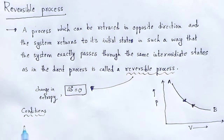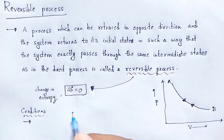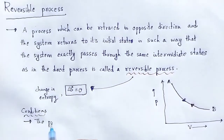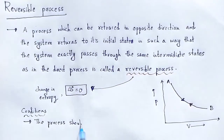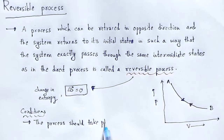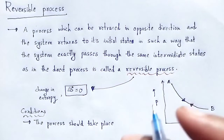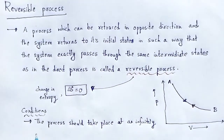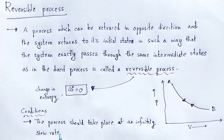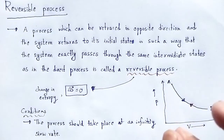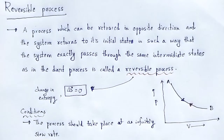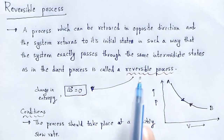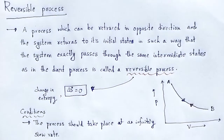One condition is that the process should take place at an infinitely slow rate. Because the thermodynamic process is very slow, it can be treated as a quasi-static process — meaning the process is carried out at a very slow rate and at each step it is consistent with the equilibrium state.